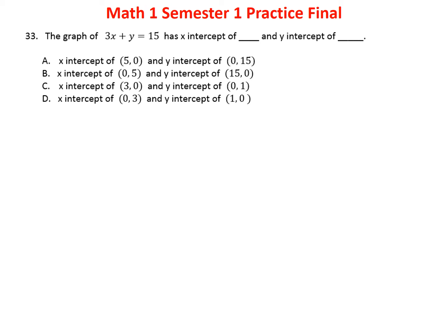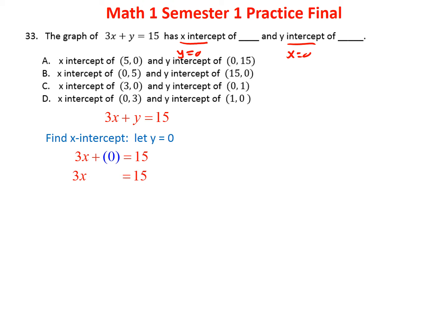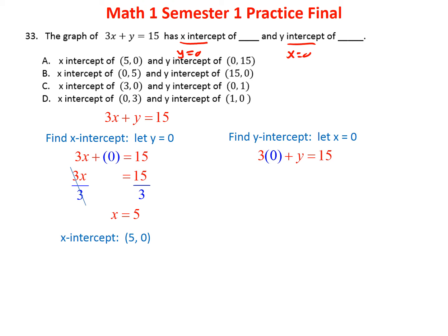Problem thirty-three: find the x-intercept and y-intercept of 3x plus y equals 15. For the x-intercept, let y equal 0: 3x equals 15, so x equals 5 — the point is (5, 0). For the y-intercept, let x equal 0: y equals 15 — the point is (0, 15). The answer is A.